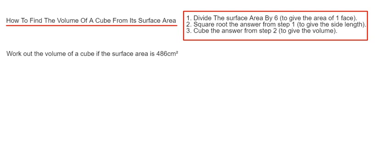So to do this we can follow the three steps in the red box. Step one is to divide the surface area by six. This will give you the area of one face on the cube. Step two is you square root the answer from step one. So this will give you the side length of the cube.